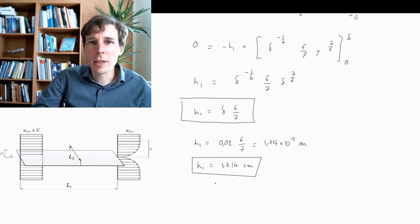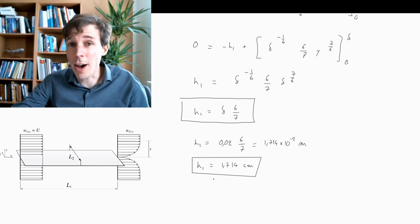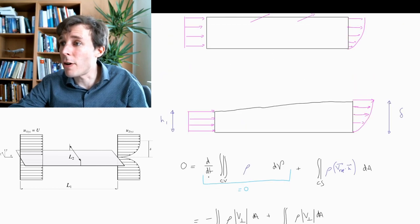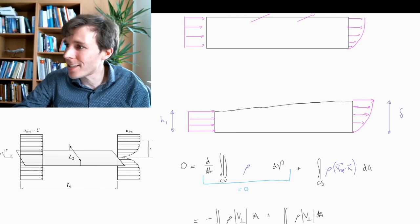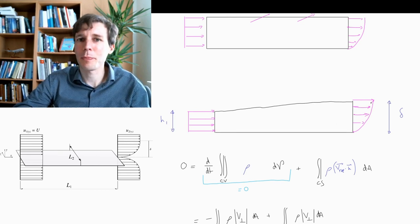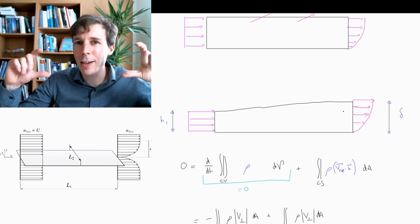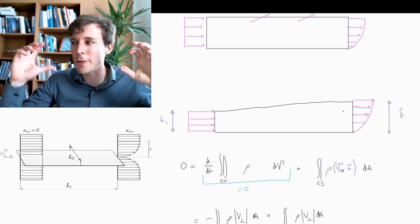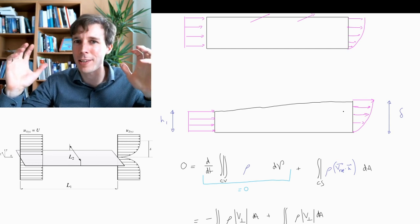This is the final result. What we calculated is the height of the inlet control volume such that it has exactly the same mass flow as the outlet. This is how you use the mass balance equation to adjust your control volume so that the mass flow incoming equals the mass flow outgoing.